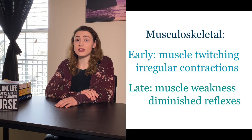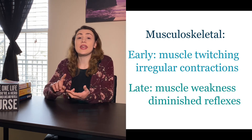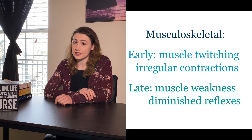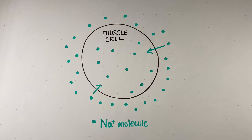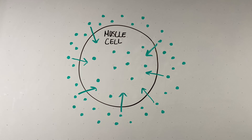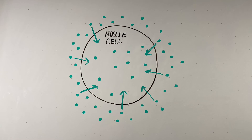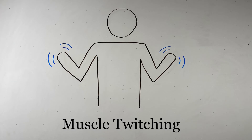In the musculoskeletal system, hypernatremia initially causes muscle twitching and irregular muscle contraction. The flow of sodium into a cell causes depolarization and an action potential, which in muscle cells causes contraction. In hypernatremia, there is excess sodium outside the cell waiting for any stimulus — causing rapid action potentials where sodium rushes in easily due to the steep concentration gradient. That's why muscles are hyperactive and twitchy at first.